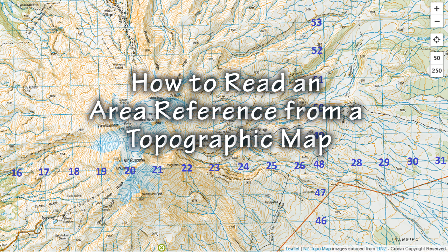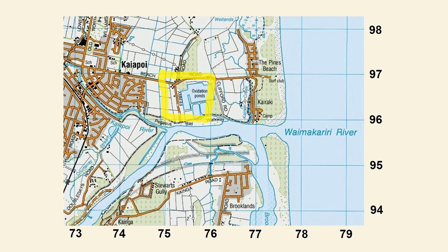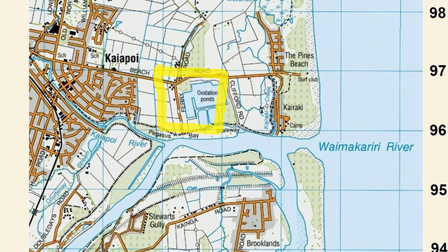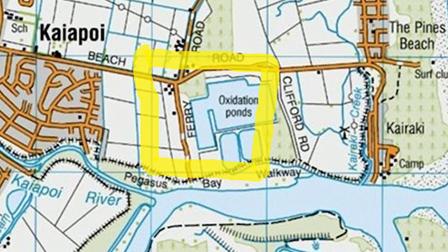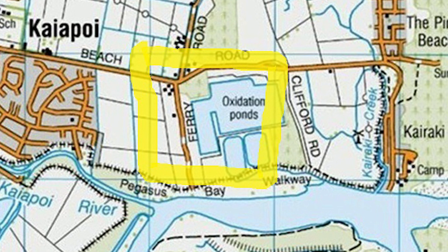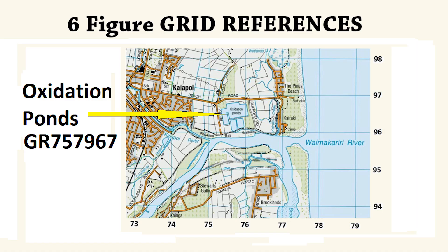Today I'm going to show you how to read an area reference from a topographic map. Sometimes people need to find a general area rather than a specific point on a map. An area reference will allow you to find a general location in a grid square. Area references comprise of four figure numbers. To find a specific point on a topographic map you would instead use a six figure grid reference.